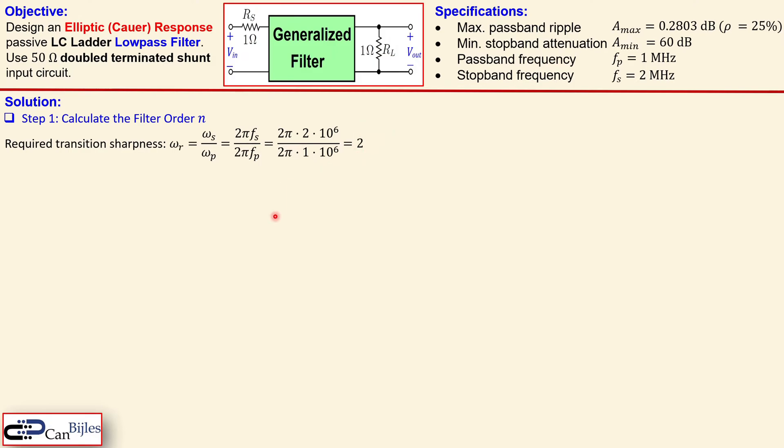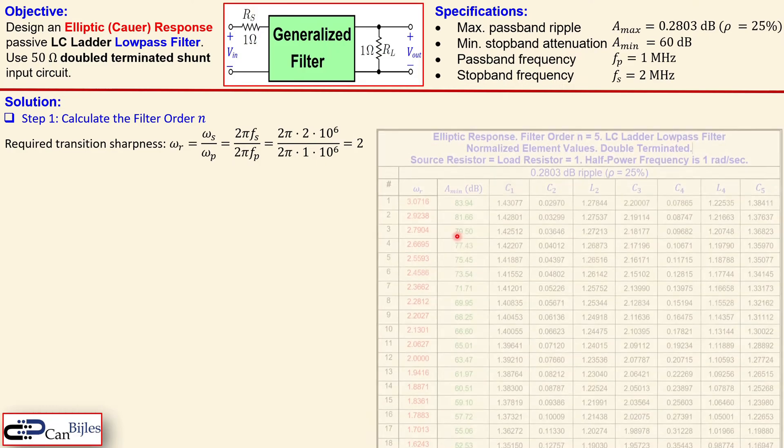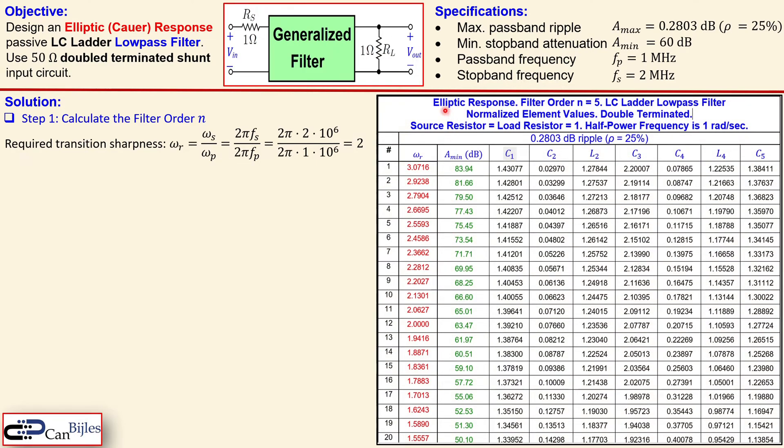So how do we now determine what the filter order must be? This is an important information but we also need to use this stopband attenuation as an information. Now looking at this table, which is a table for a fifth order elliptic response filter.